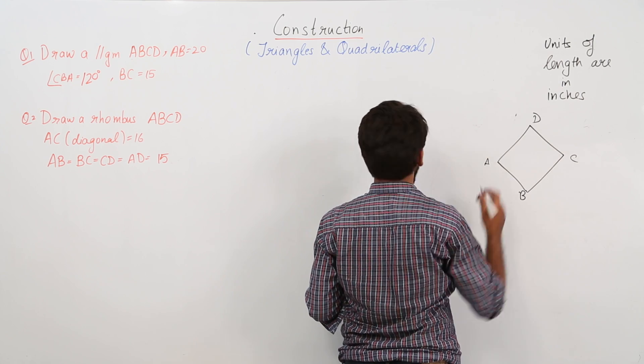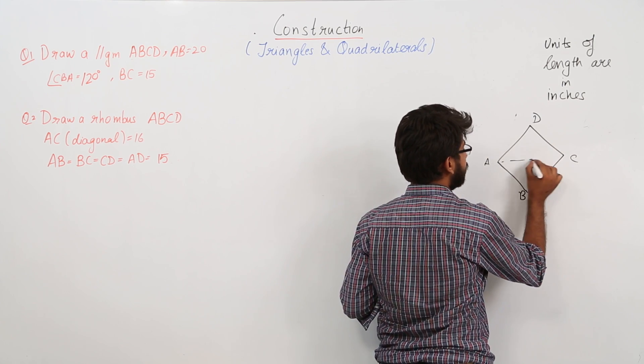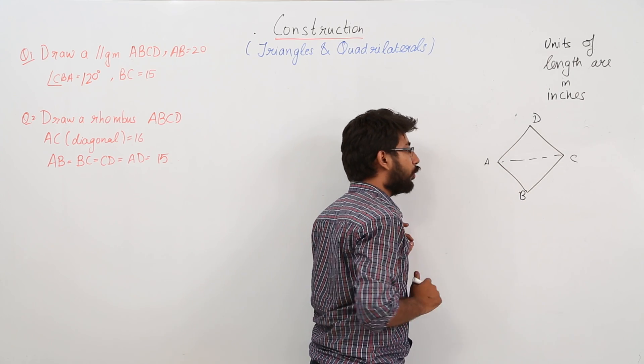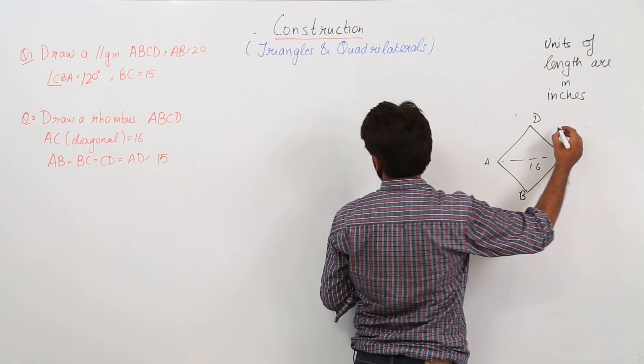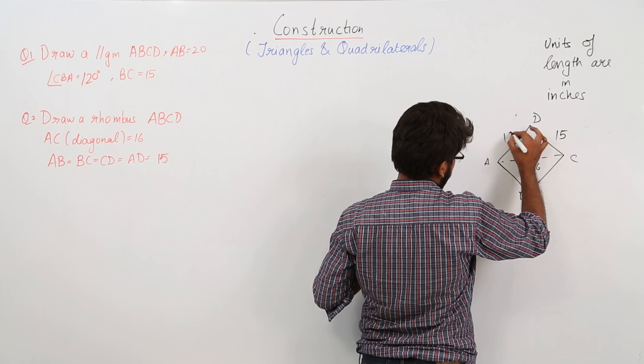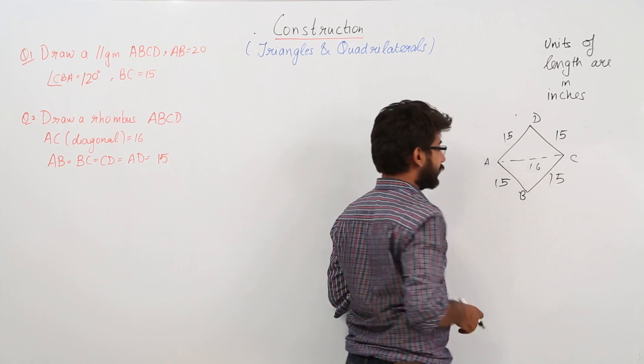Now AC is equal to 16, that means this side which I have drawn with dotted line is equal to 16 and all these sides are equal to 15. So we have to construct this rhombus.